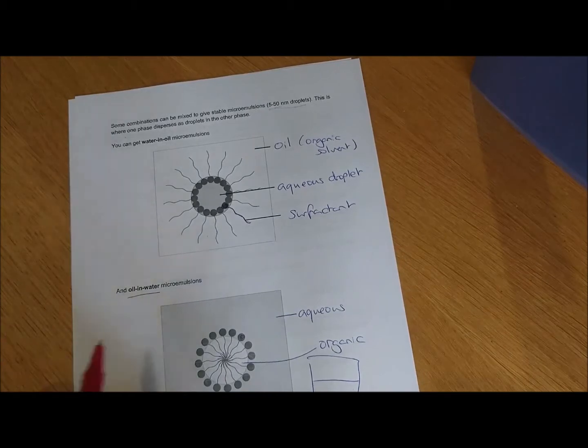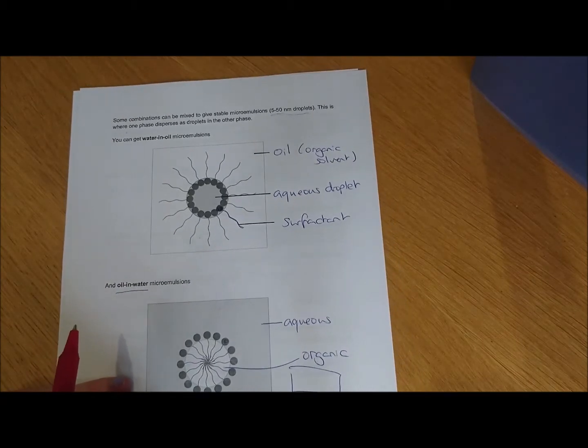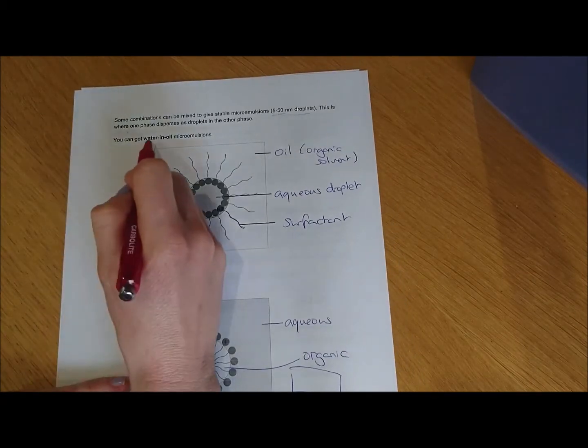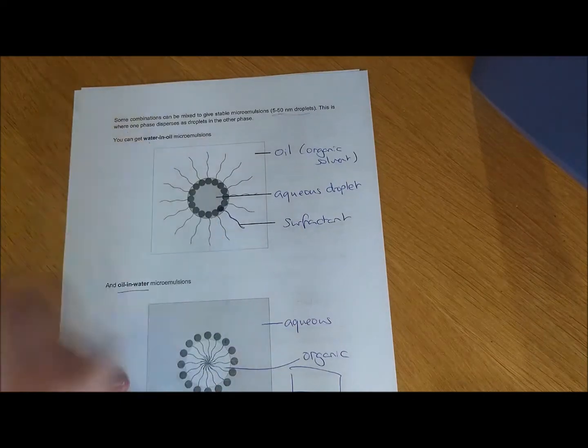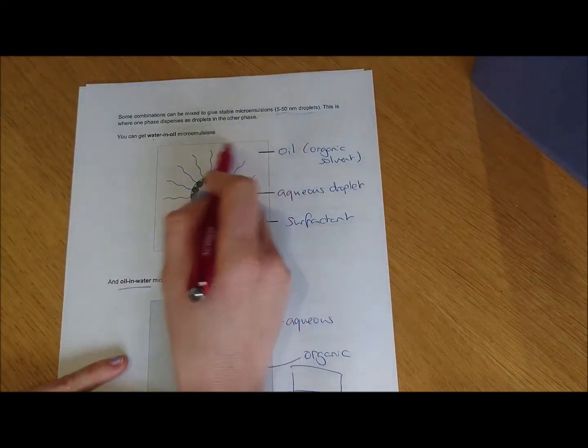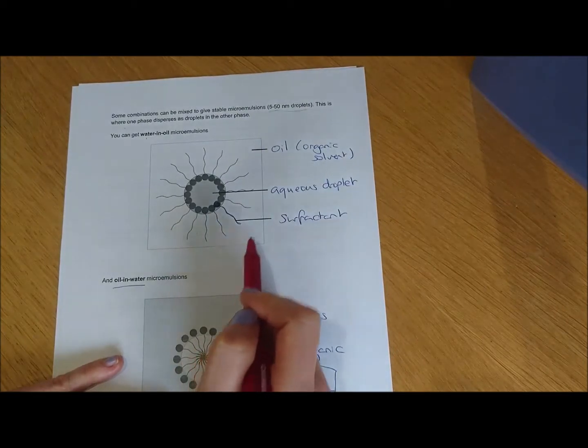There's two types of microemulsions you can get. You can get water in oil microemulsions. That's droplets of water in an oil continuous phase. So our continuous phase is our oil, that's the organic surfactant. Our droplets are the water droplets, so they are aqueous droplets.